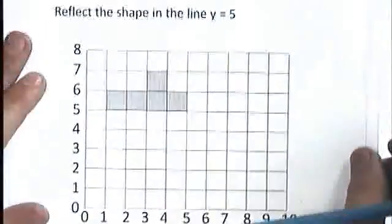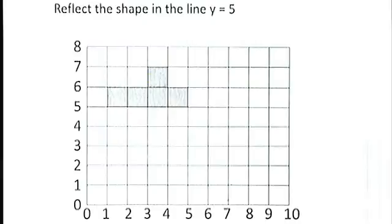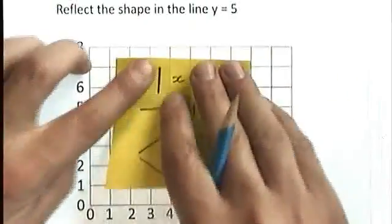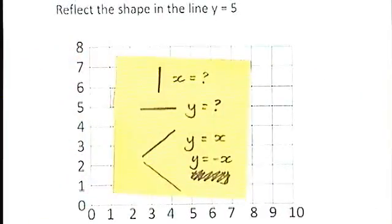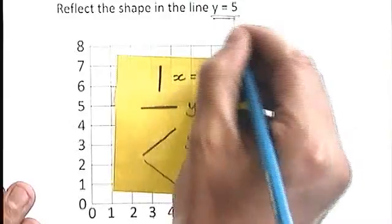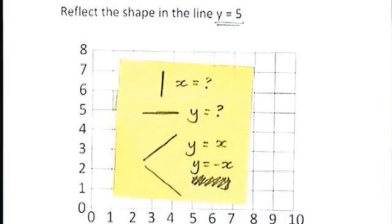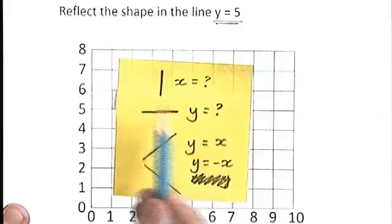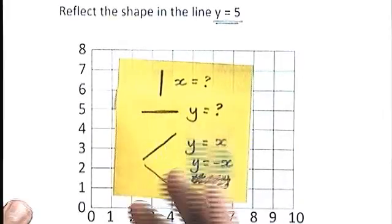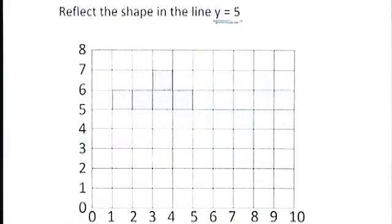Here is a more common sort of question. Reflect the shape in the line y equals 5. No line is given to you. No mirror line is marked upon the grid. What you need to do is you need to put your own mirror line onto this sort of question. And for that you need to know these different shapes of graph. Since this one says y equals 5, I think it's a graph which will go across like that. And you can guess where it's going to go. It's going to go at 5.